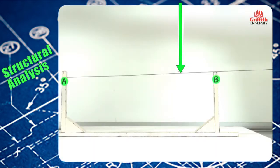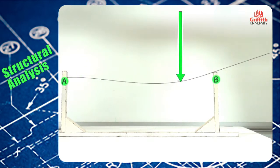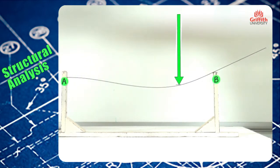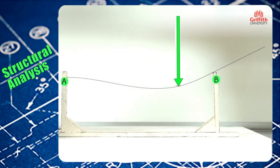Now if we apply a concentrated load somewhere between A and B, we will notice that the deformation for this beam is different from the one for a simply supported beam because point A is a fully fixed support.